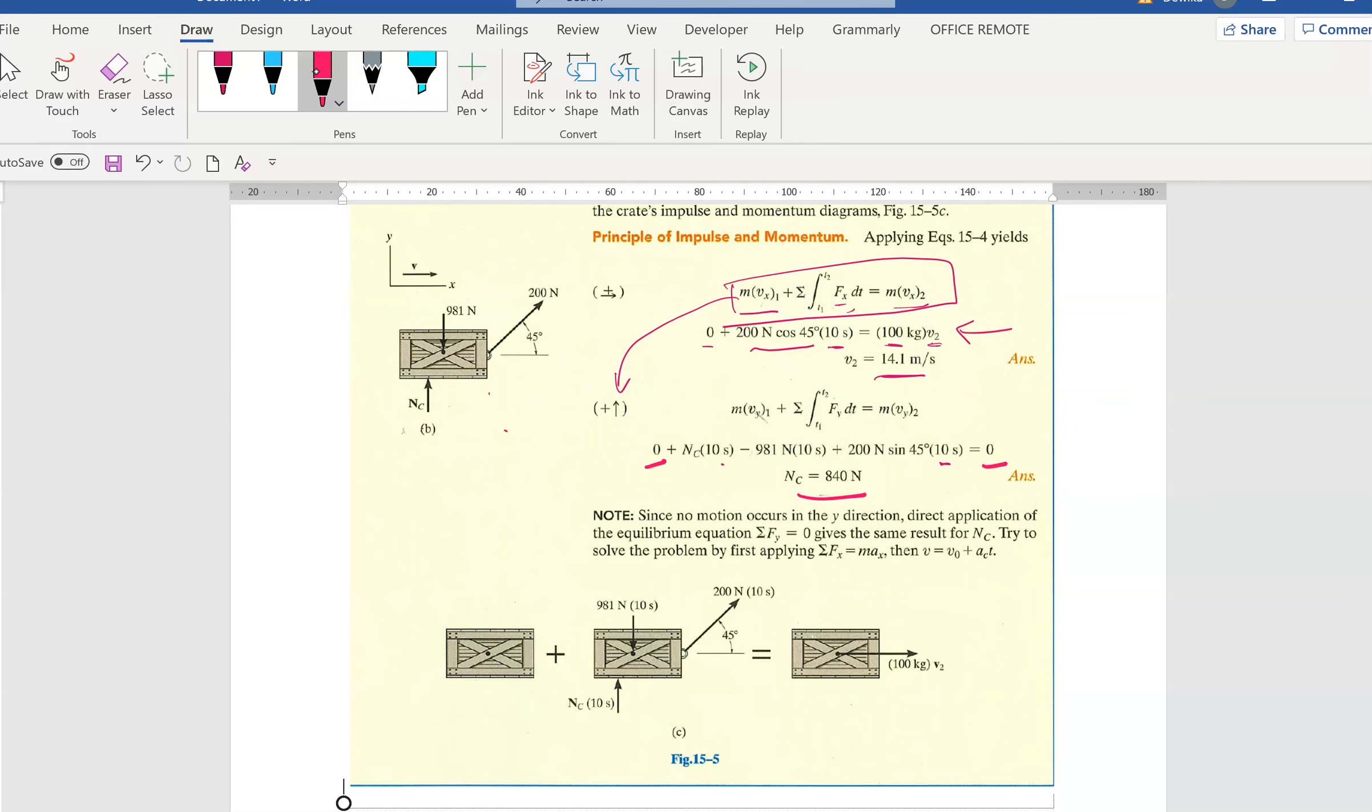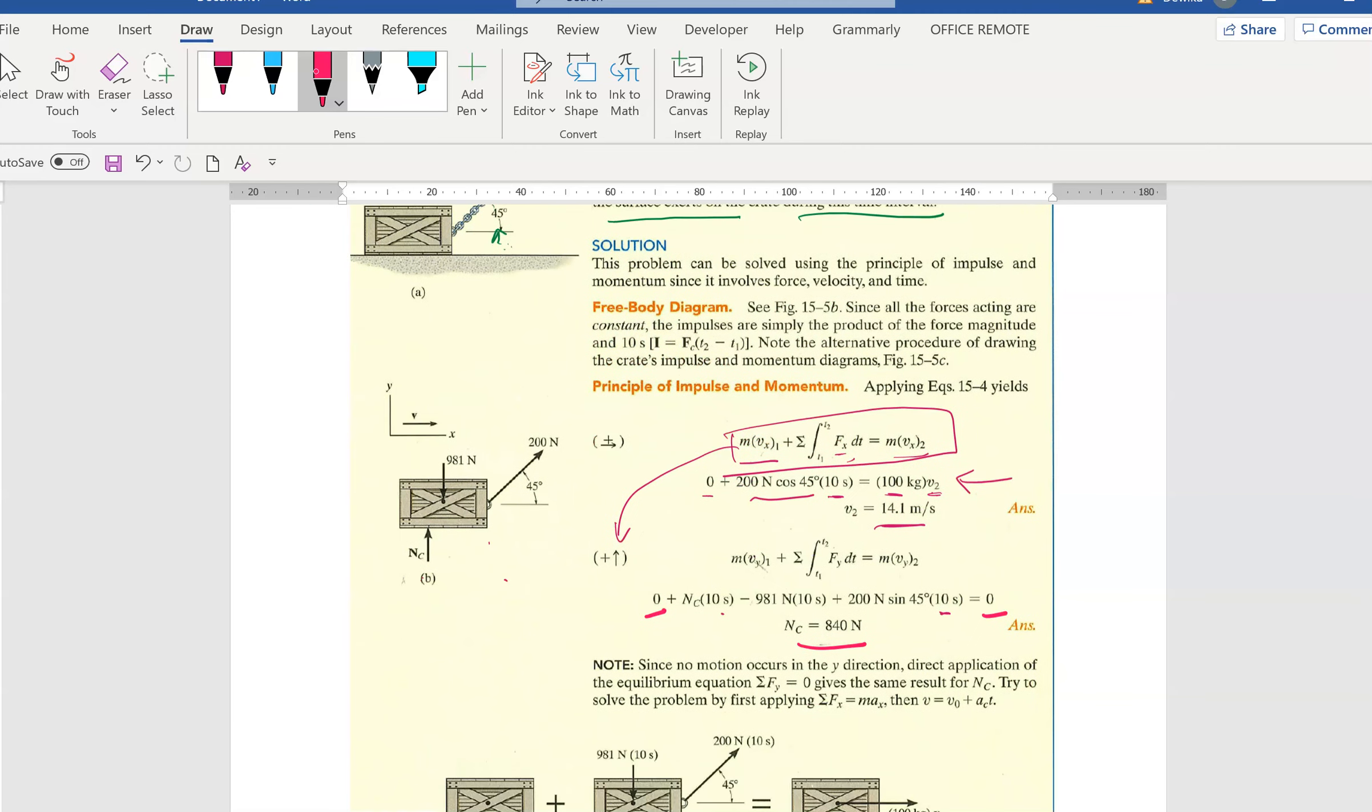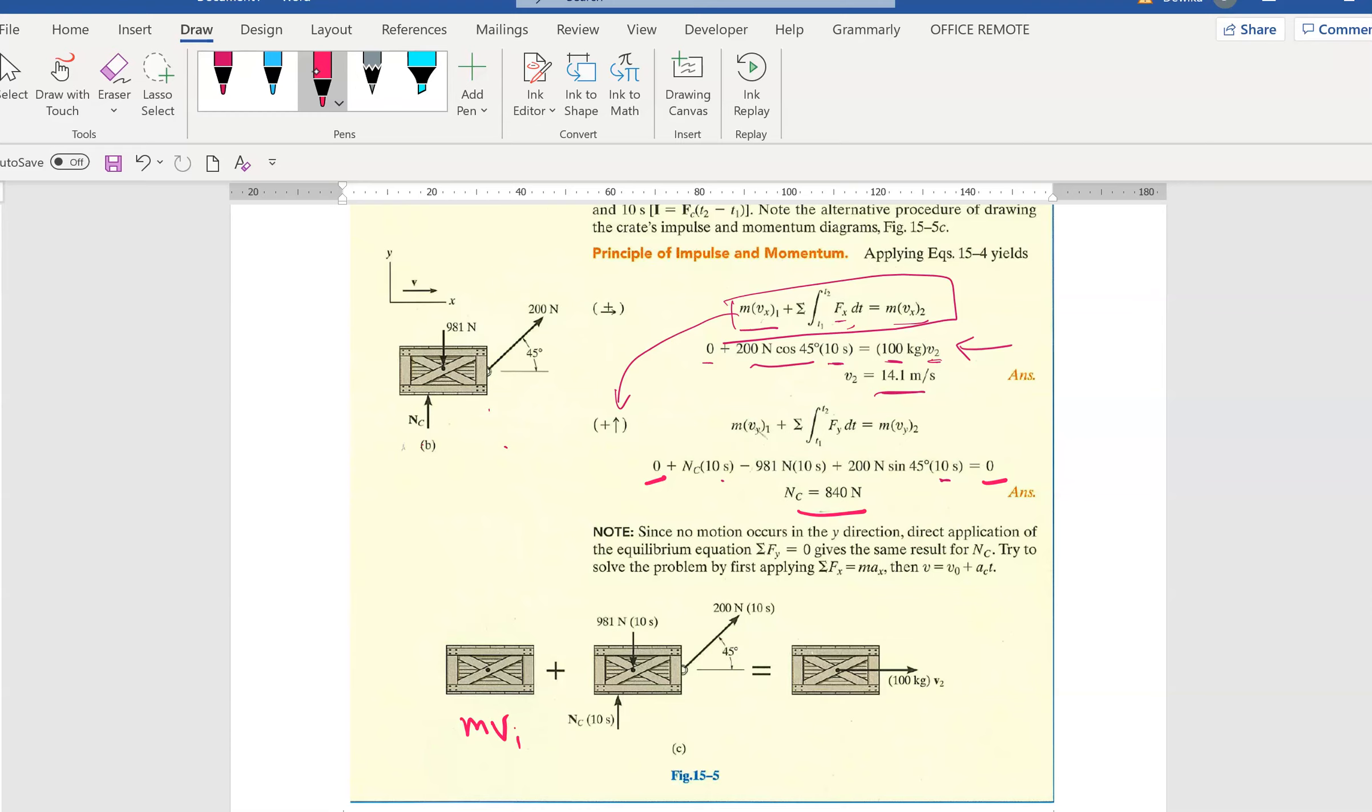If you draw this diagram, you can see this is your mv1, the first part of the formula, the initial momentum. This will be the forces, all the forces. This will be the final velocity. This diagram represents the formula. Now, in your exam, you don't need to draw this diagram - no need. The only diagrams you need to draw are the free body diagram and the kinetics diagram. These two diagrams carry marks. We have come to the end of this chapter - not the whole chapter, just sections 15.1 and 15.2 of the textbook. I'll meet you again in the next video for section 15.3.